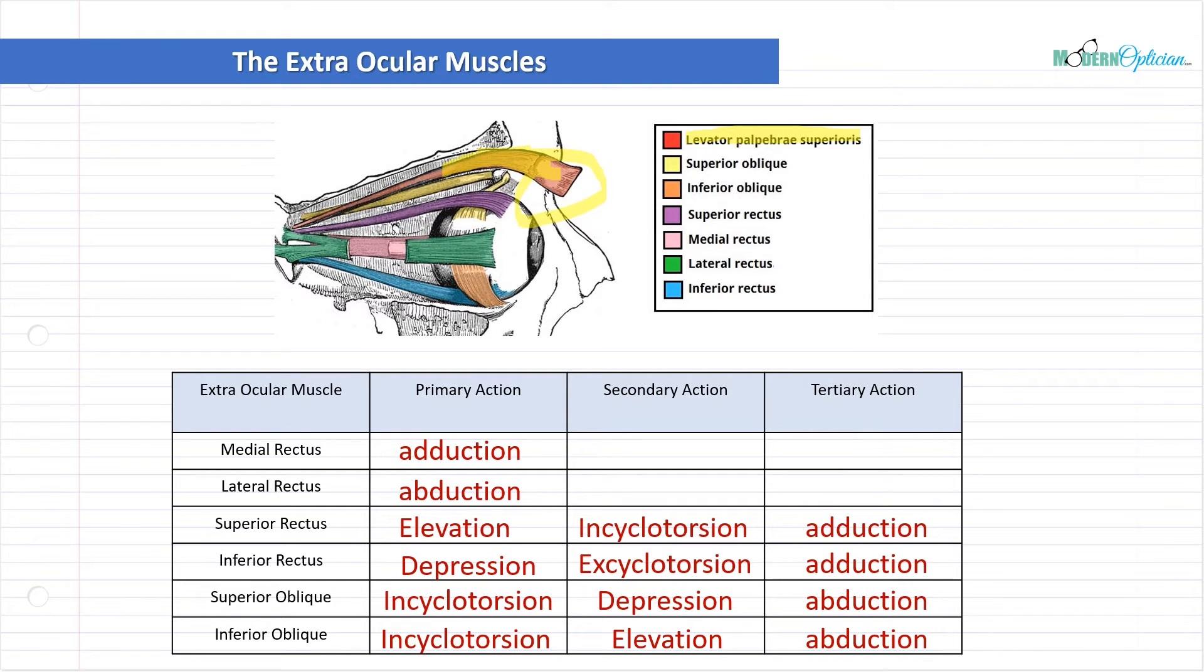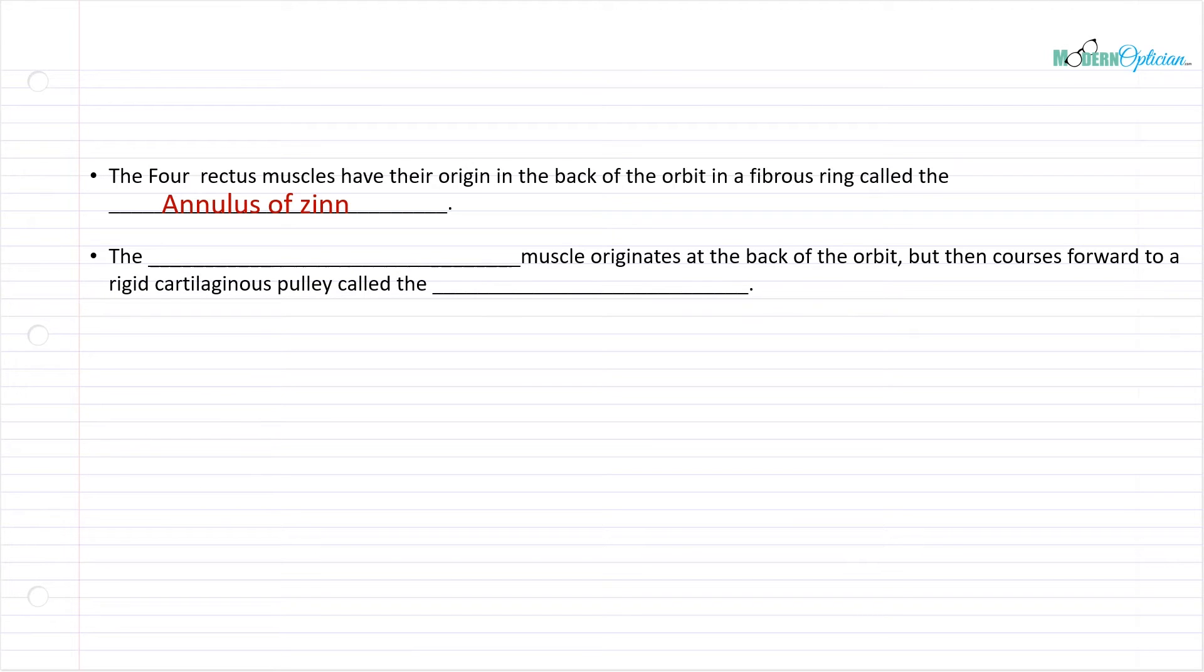The four rectus muscles have their origin at the back of the orbit in a fibrous ring called the annulus of Zinn. These are catchwords you'll hear and you'll have a bit of understanding of what that means. Just think that everything originates from one spot, the rectus muscles at least, and they're all at that annulus of Zinn.